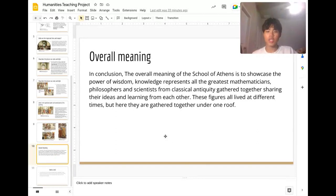So what is the overall meaning and message? In conclusion, the overall meaning of the School of Athens is to showcase the power of wisdom and knowledge that represents all the greatest mathematicians, philosophers, and scientists from classical antiquity gathered together, sharing ideas and learning from each other. They are communicating through knowledge, and these figures all lived at different times, but are gathered together under one roof to share wisdom.